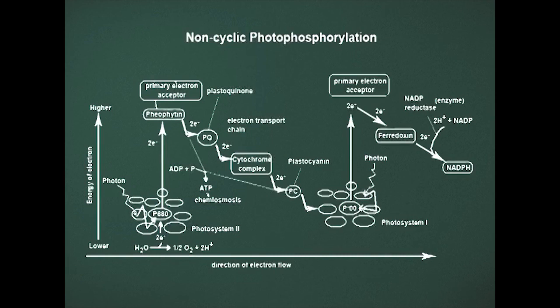Light coming from the sun is trapped by P680 of Photosystem 2, which raises some of the electrons to a higher energy level. This excited P680 emits high energy electrons to pheophytin, which is a chlorophyll molecule where the central magnesium is replaced with two hydrogen atoms. The oxidized P680 returns to its ground state by accepting an electron released during splitting of a water molecule with the release of molecular oxygen. The overall removal of four electrons from oxidation of water will release protons and one molecule of oxygen.